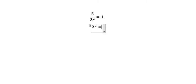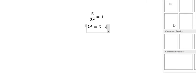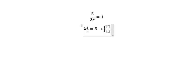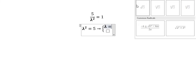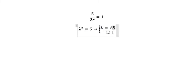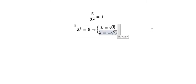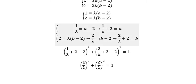We move 1 to the left and lambda squared to the right. This gives two solutions: lambda equals the square root of 5, and lambda equals negative the square root of 5.